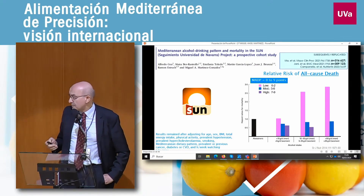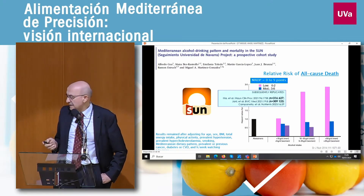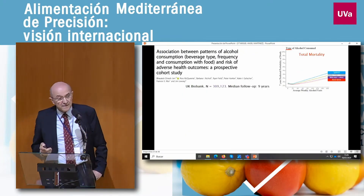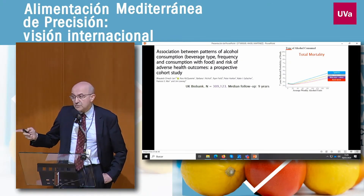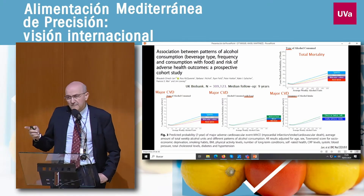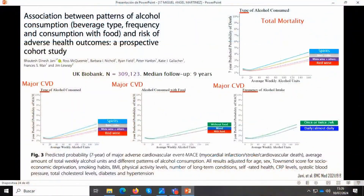We published this ten years ago, and recently two studies in the UK Biobank and another study in Italy replicated our findings. For example, in the study by Gianni, for total mortality, keeping constant the amount of alcohol, if you prefer red wine, total mortality is reduced. This is also present for cardiovascular disease — for major cardiovascular disease — as well as for consuming alcohol with meals or spreading consumption all over the week. So the drinking pattern is definitely very important.